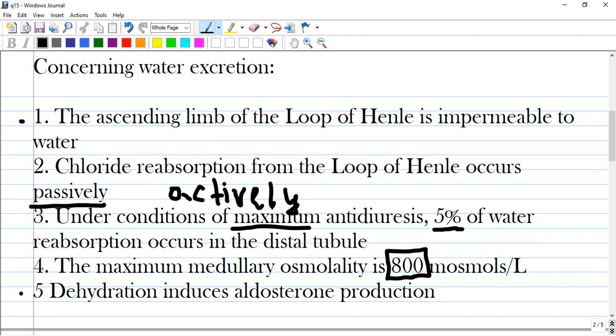And dehydration induces aldosterone production. Dehydration induces decrease in blood pressure, and this induces a forward mechanism called renin-angiotensin-aldosterone for reabsorption of water and sodium back for reestablishing good volemia.